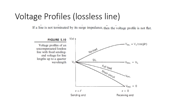Now I want you to understand this voltage profile. First, Vs equals Vr — the sending end equals the receiving end — because there is no voltage drop. This is called surge impedance loading condition. If there is no load — we remove the load — the voltage at the load end will be higher than the sending end. We call it no load voltage.